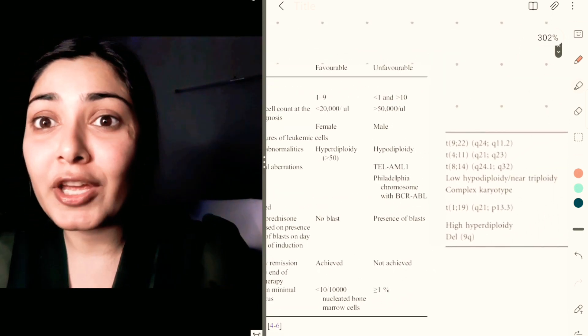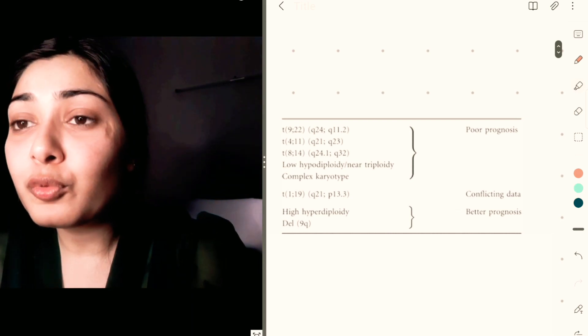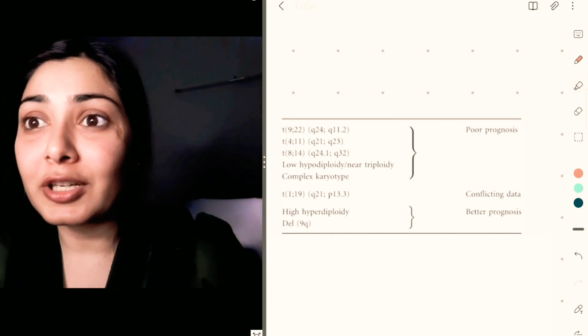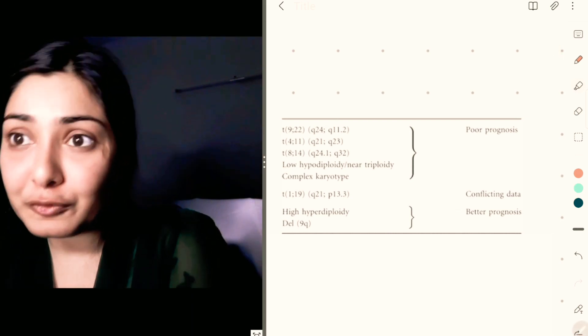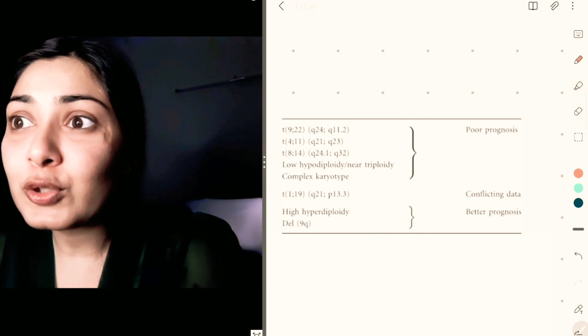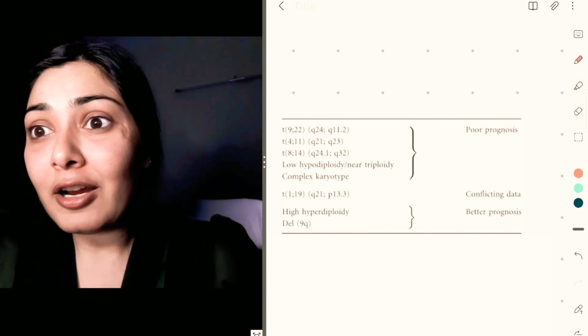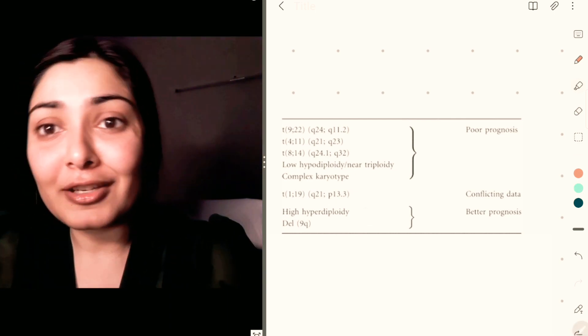Here are the list of chromosomes that have poor prognostic factors: they include 9;22, 8;11, and 8;14. Low hyperploidy and complex karyotype are also poor prognostic factors. It comes to good prognostic factors—it is hyperdiploidy and deletion 9q.